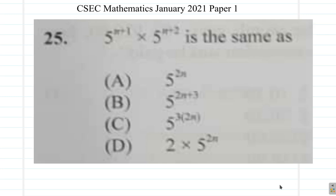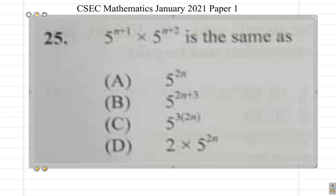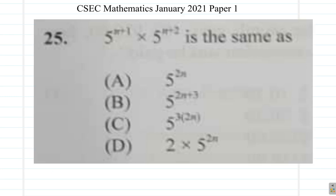Alright, this is question 25. I myself am not able to see very well what is here, but this kind of looks like 5 to the n plus 1 multiplied by 5 to the n plus 2. Remember, this is the only January 2021 paper I was able to find online, right? Paper 1.